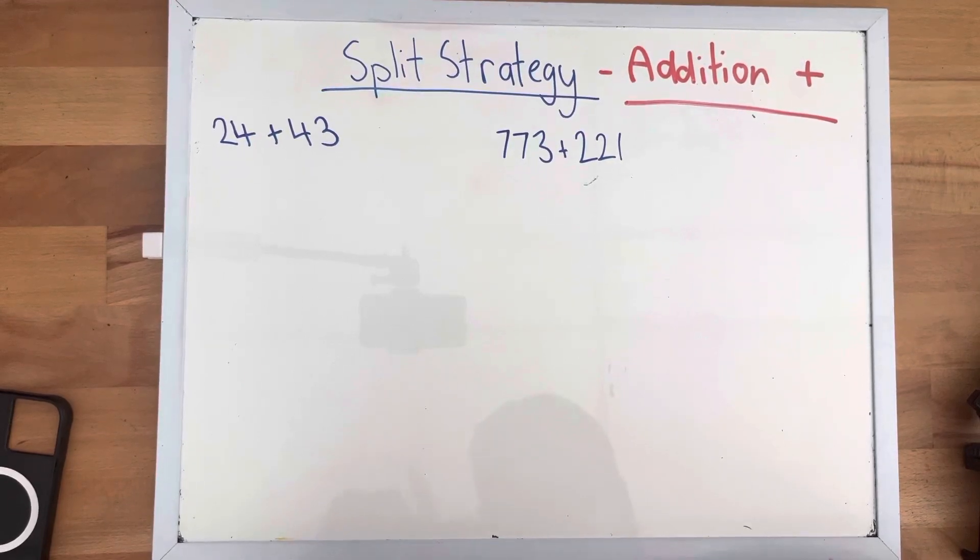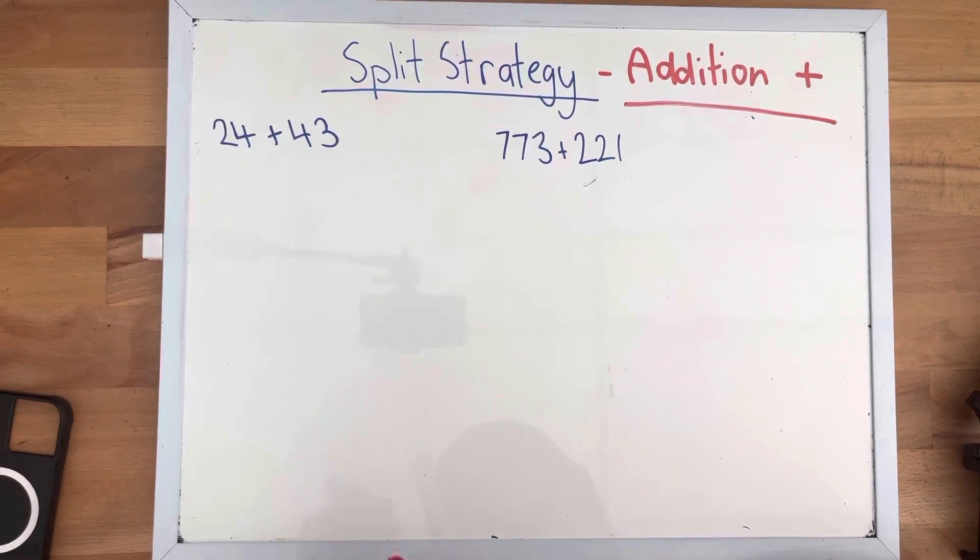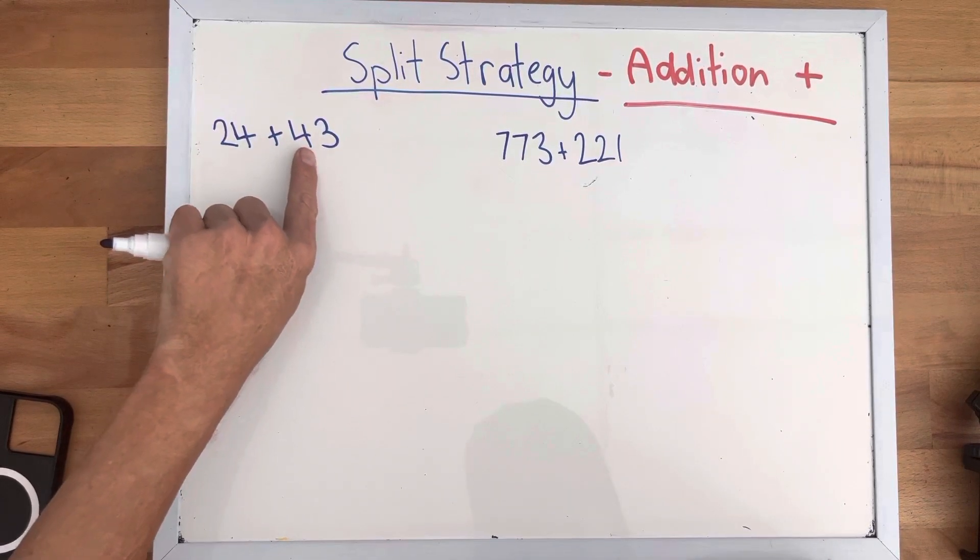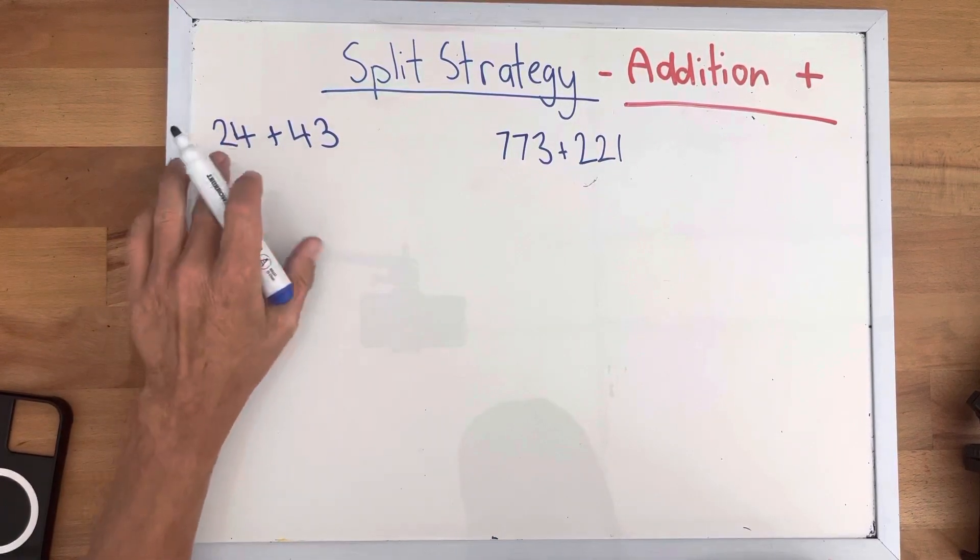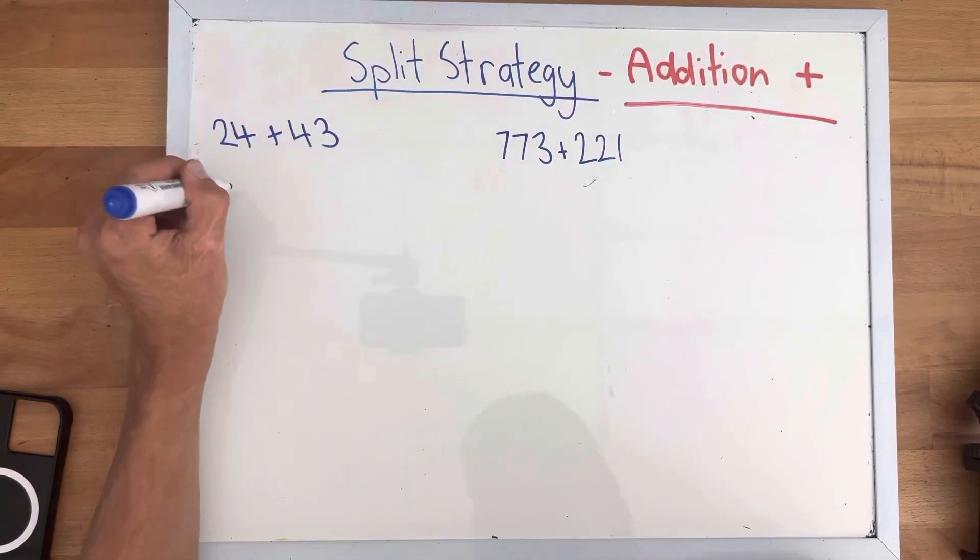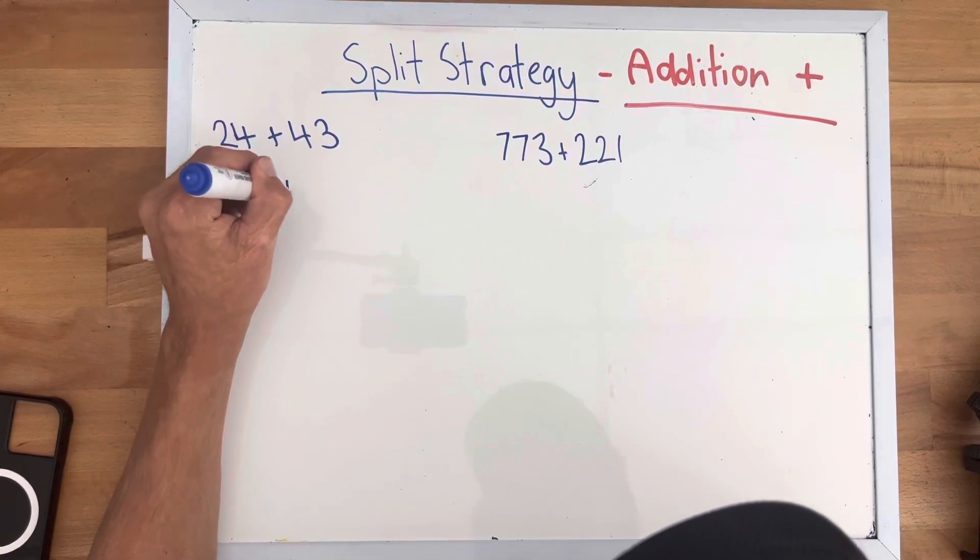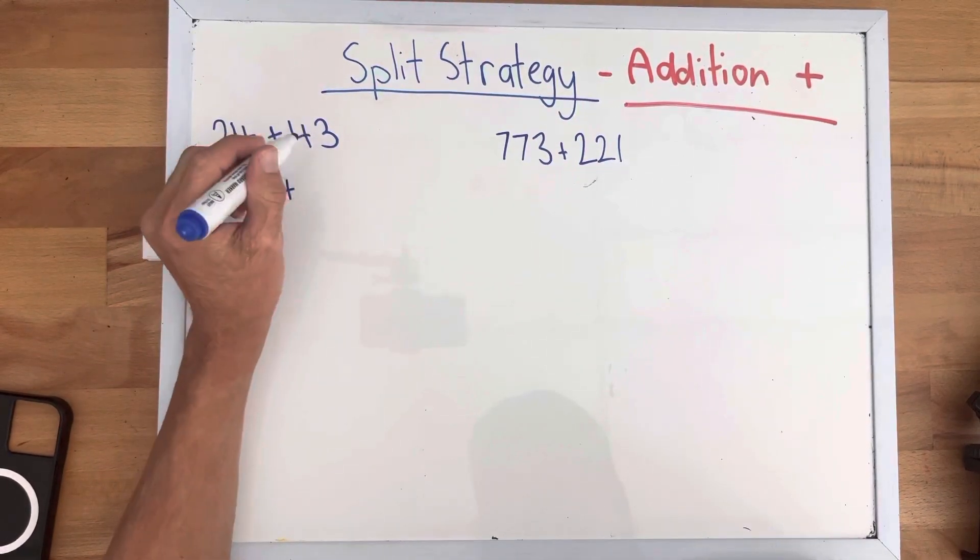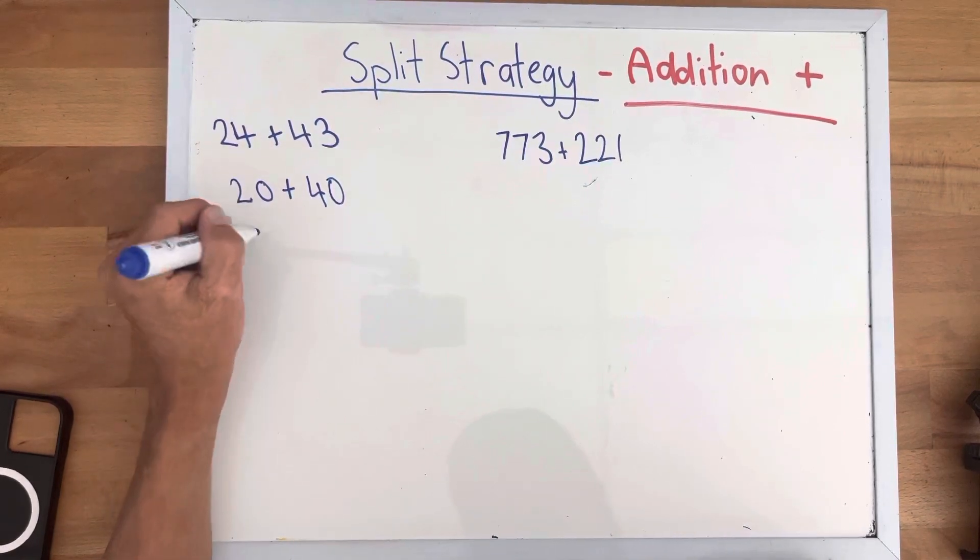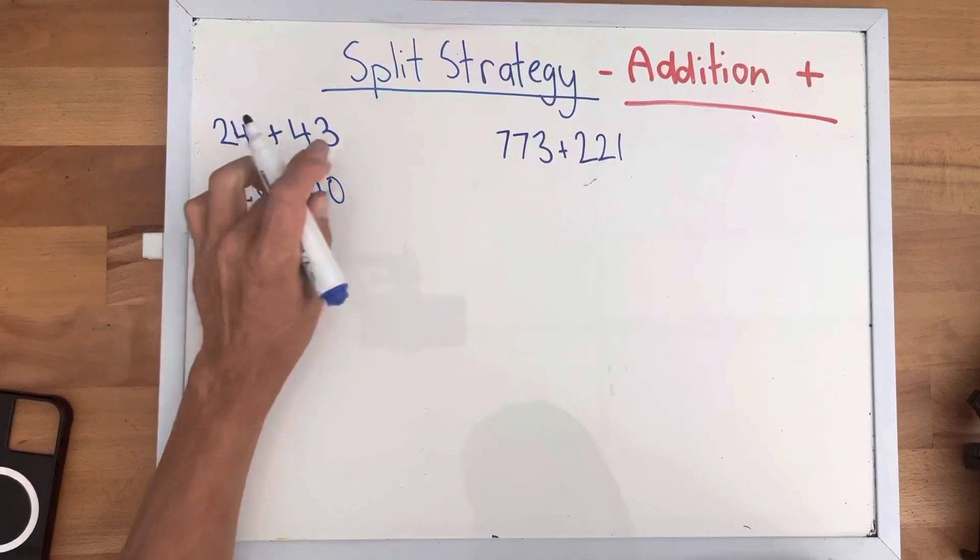So first up we're going to do our two digit number. And in order to do the split strategy for 24 plus 43, we need to split this number into its tens and into its ones. So for 24 we have 20, and for 43 we have 40. And for our ones we have 4 and 3.